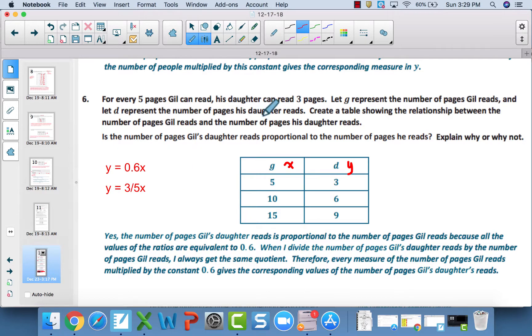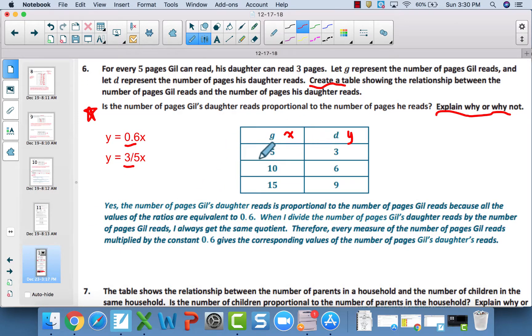Number 6. This is proportional. In this case, once again, it's asking us to create a table. It's asking us to answer this question and explain. The constant of proportionality here is 3 fifths or 6 tenths if you want to use decimals. Meaning, you take the pages Gil reads, you multiply it by 6 tenths and you'll get the pages his daughter can read. Gil, in this case, in my table, is x. The daughter is y. So you multiply x times 6 tenths to get y or you multiply x times 3 fifths to get y. 6 tenths here and 3 fifths are the same number, just one's written as a decimal and one is written as a fraction. So yes, this is proportional. This is a table to help support the reasoning.